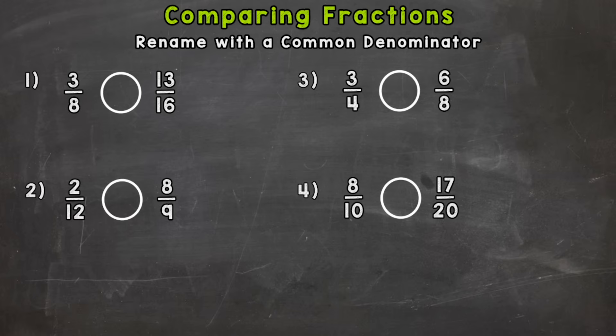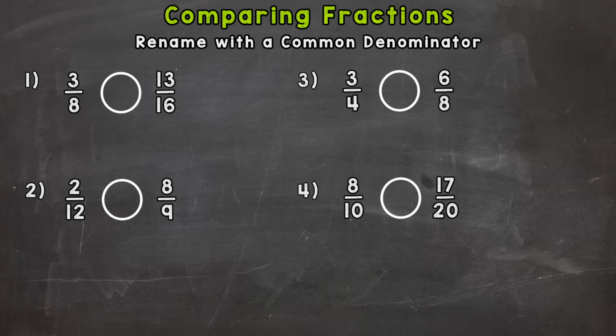For number one we have three eighths and thirteen sixteenths. The first thing you want to do when comparing fractions is check to see if they have a common denominator. If so it'll be pretty easy to compare. If they do not have a common denominator we need to find one and rename those fractions. So we have three eighths and thirteen sixteenths — obviously we don't have a common denominator, so we need to find one and rename.